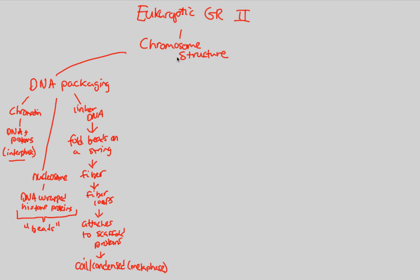This path of DNA packaging is going to play a crucial role when we look at gene expression. Now that we understand DNA can be packaged in different ways, this plays a major role in how we regulate DNA itself — because we're trying to determine whether we're going to express or not express certain genes. The chromosome structure, which is basically the way DNA is packaged, is going to directly influence the way that we express genes. We're looking mainly at the transcriptional level of gene regulation, and transcription only happens under specific conditions.